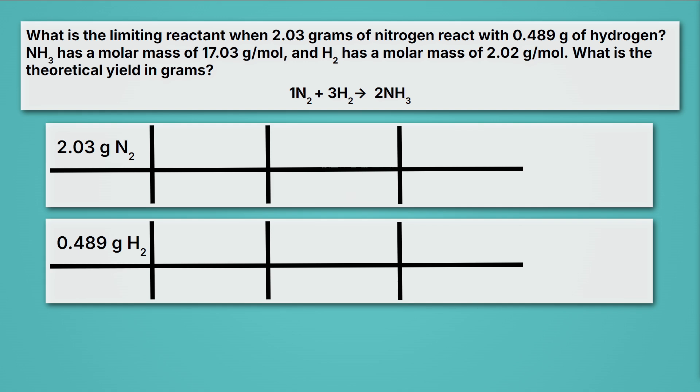We actually already did the problem up top. If that problem was sketchy to you, it's actually a great idea to pause the video and see if you can, from memory, reproduce the conversion we just did to go from grams of nitrogen to grams of ammonia. Well, when we did that, we got 2.47 grams of NH3. And now I want everyone to pause the video and complete this math for our hydrogen. How many grams of NH3 will we be able to get out from our hydrogen?